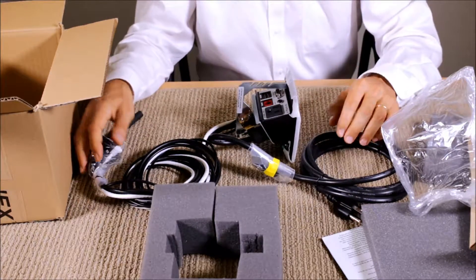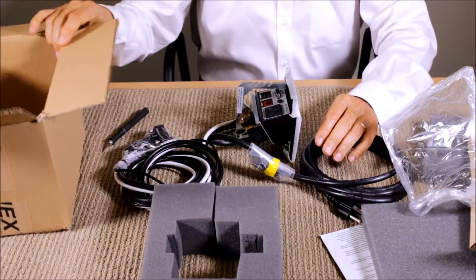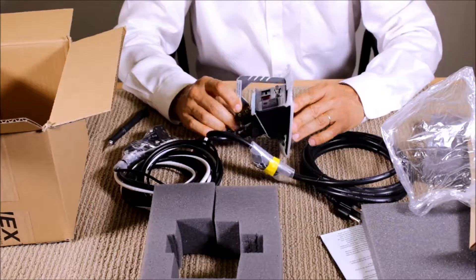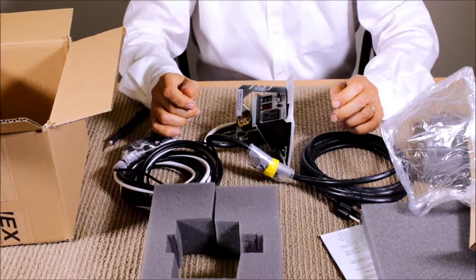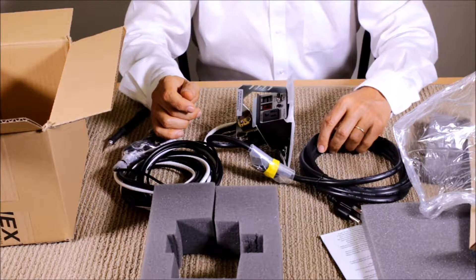What you get in the package is the unit itself, user guides, some foam, and a box. That's the total package that you get with the TNP-128 and also with all of the TNP Junior units.